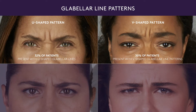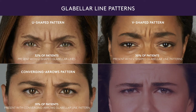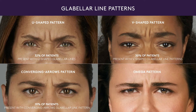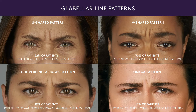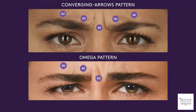The third most common glabellar line pattern is the converging arrow pattern, seen when the eyebrows come together with little or no depression or elevation between the brows during contraction — 19% of patients present with this pattern. An omega pattern occurs when eyebrows come together and an elevation between the brows is observed in the form of the Greek letter omega, in 10% of patients. The images highlight the variations in corresponding injection sites with Botox Cosmetic based on these glabellar line patterns, including converging arrows and omega pattern.